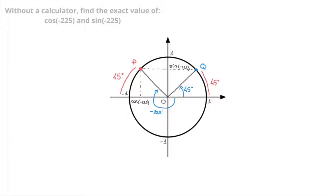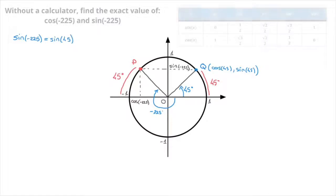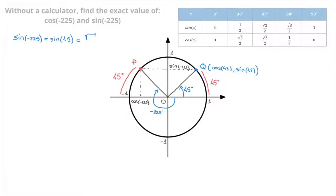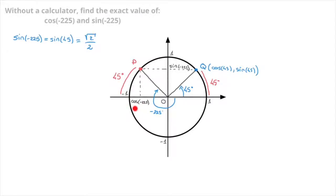By definition, Q has coordinates cosine of 45 and sine of 45. We now compare the coordinates of the two points P and Q. It's quite clear that they have the same vertical coordinate. Since the vertical coordinate of point P is sine of negative 225 and the vertical coordinate of point Q is sine of 45, we can state that sine of negative 225 equals to sine of 45. Sine of 45 has a well-known value — it's equal to the square root of 2 over 2. We now compare the horizontal coordinates of point P and Q. Point P has horizontal coordinate equal to cosine of negative 225, and point Q has horizontal coordinate equal to cosine of 45.